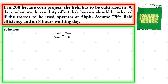Substituting the values, we have our area of 200 hectares over the time, which is solved by multiplying the number of days (30) by the operating time of 8 hours per day, equal to speed of 5 km/h times the width times the field efficiency of 0.75, all over 10.